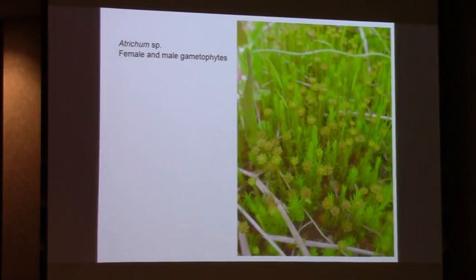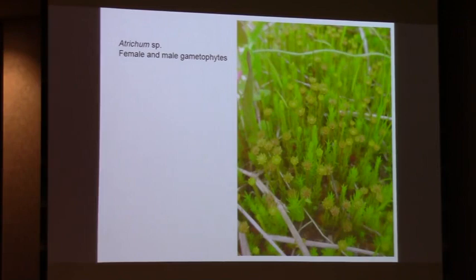We've got male gametophytes here with a little splash cup - these plants are only about this tall. These are the females, lacking the splash cup. The sperm-producing structures, the antheridia, are clustered in the splash cup. On rainy nights - 'Rainy Night in Georgia' - these splash cups fill up with water, and by chance another drop of water lands in the splash cup and splashes out sperm-laden droplets. By chance some of them land on the adjacent archegonial heads of the female gametophytes, and the sperm swim through the water and accomplish fertilization.